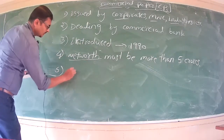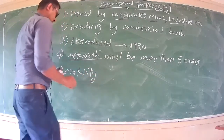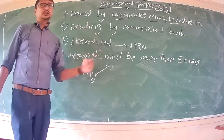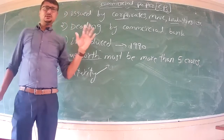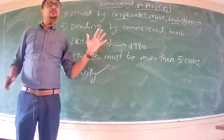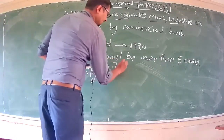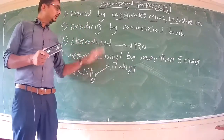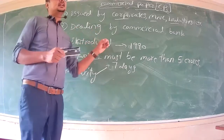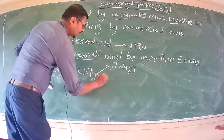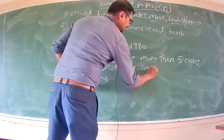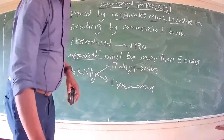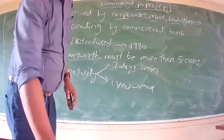Maturity period means the time from issuing the commercial paper to paying back the entire amount raised. The minimum maturity period is 7 days — the entire transaction including borrowing and repayment completes within 7 days. The maximum maturity period is 364 days, i.e., within a year.